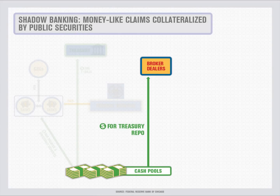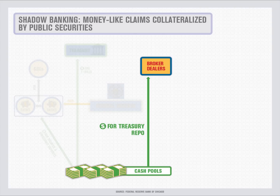Another option for cash pools looking for safe overnight cash-like investments is the Overnight Treasury Repurchase Agreement, or the repo market. A repo is a sale of securities coupled with an agreement to repurchase the same securities at a higher price the next day. From the perspective of the cash pools investing money, a repo closely resembles a collateralized loan. For now, let's focus on repos where Treasury securities are used as collateral.